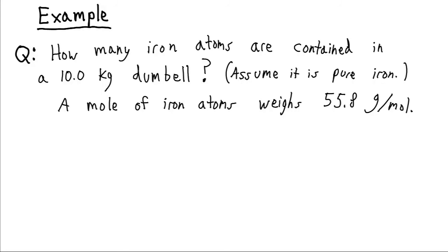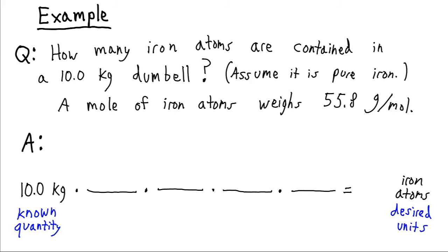Now for our example, let's figure out how many iron atoms are contained in a 10 kilogram dumbbell. Now we're just going to assume that we have pure iron here. And some information, which we're going to see how to look up later, a mole of iron atoms weighs 55.8 grams per mole. All right, so how are we going to solve this problem? Well, we're going to find that there's some consistency to how we solve problems in chemistry. We're going to stick with the tried and true factor label method. It starts by writing down our quantity.